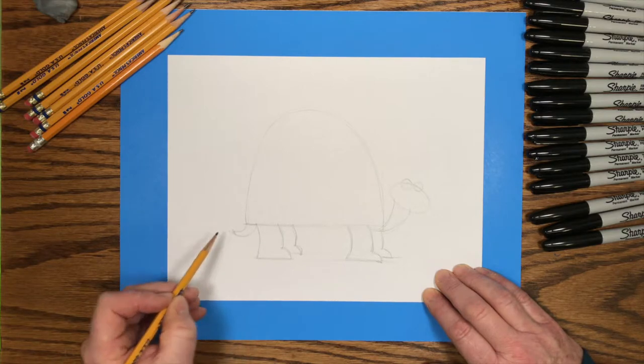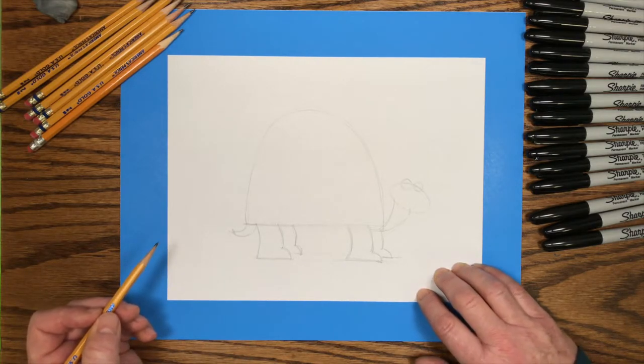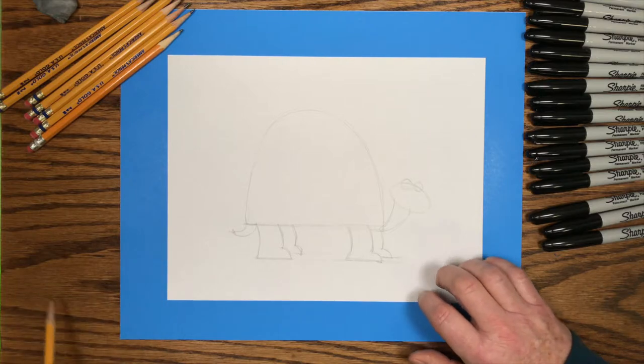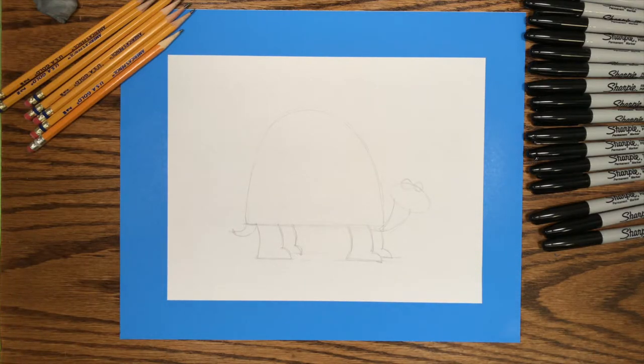And then finish with a couple of curved lines at the back of the turtle's shell, which is his little tail. And those are the shapes we'll use to draw this little turtle character.